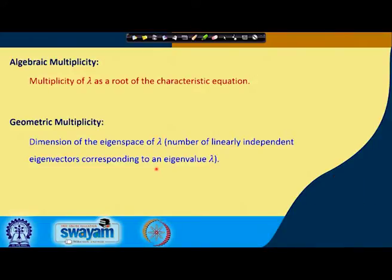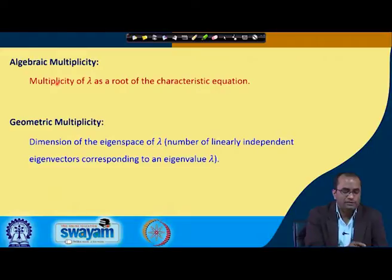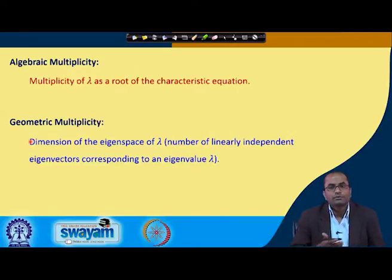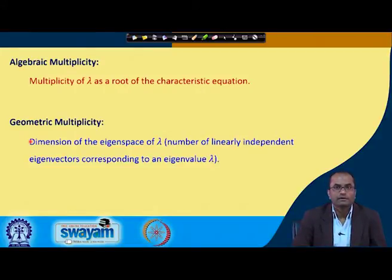These are the two numbers we will use for describing the multiplicity of lambda, because we have seen in several examples that the characteristic roots — all the eigenvalues — were repeated. We can now quantify this with the algebraic multiplicity. For instance, if one root is repeated three times, its algebraic multiplicity is three, and the geometric multiplicity is the dimension of the eigenspace or the number of linearly independent vectors corresponding to that eigenvalue.